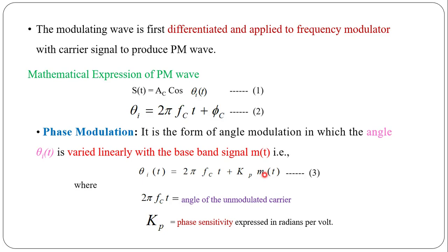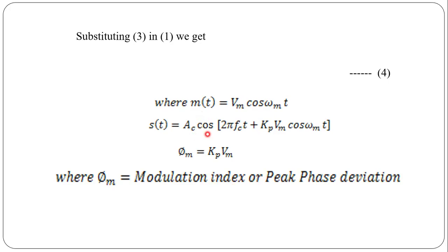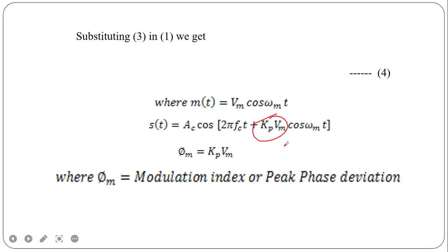Substituting into the first equation: s(t) = Ac·cos(2πfc·t + kp·Vm·cos(ωm·t)), where Vm·cos(ωm·t) is the message signal. The term kp·Vm is called φm, which is the phase modulation index or phase deviation.